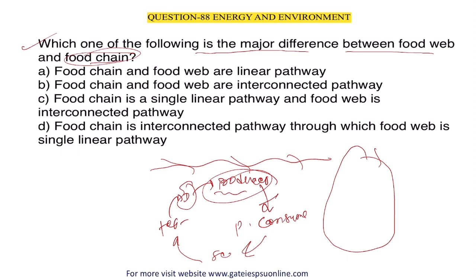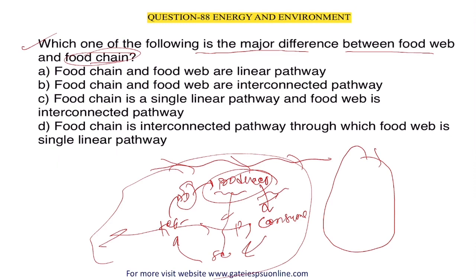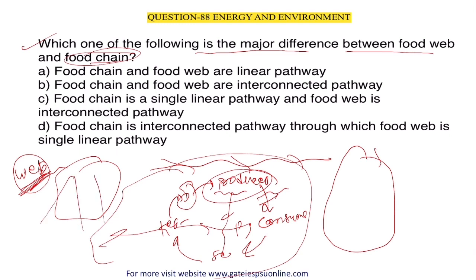When food chains are interconnected — connected with each other in a complex structure — that is known as a food web. Just like the internet is a complex interconnection of all computers worldwide, all producers and consumers connected to each other in a complex way is called a food web.